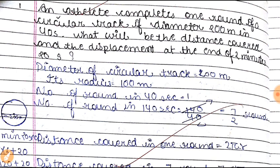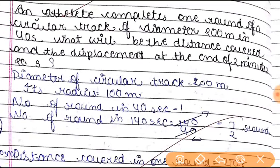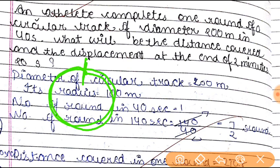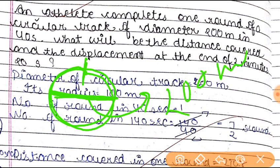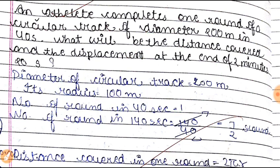We have seen definitions; now we move to questions. An athlete completes one round of a circular track of diameter 200 meters. The athlete starts from a point on the circular track and completes one round, going back to the same point. The diameter of the track is 200 meters, and one round is completed in 40 seconds.